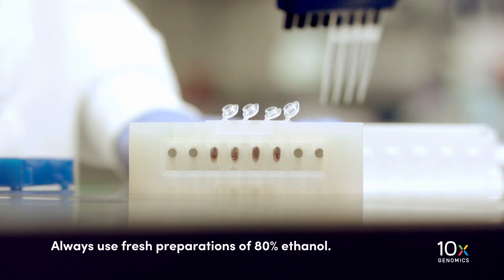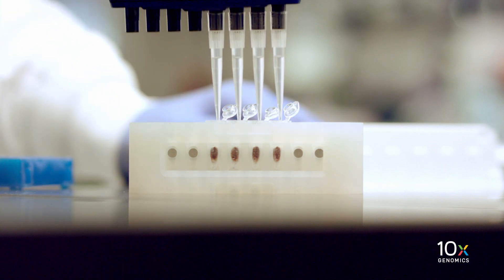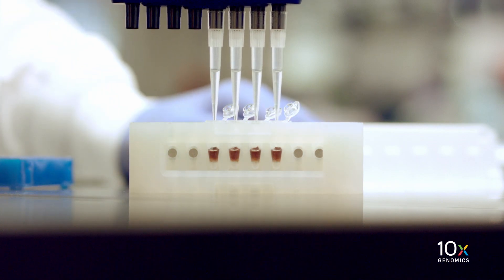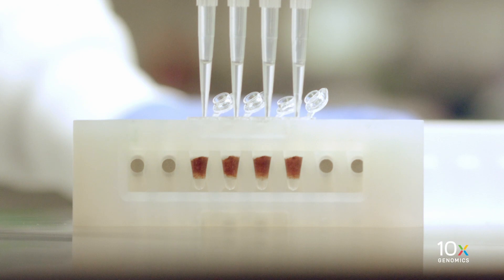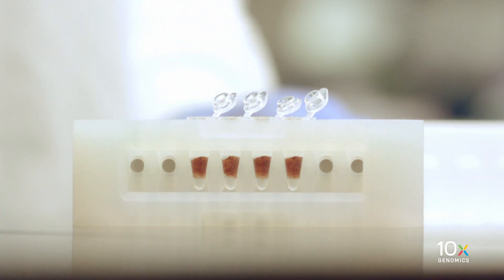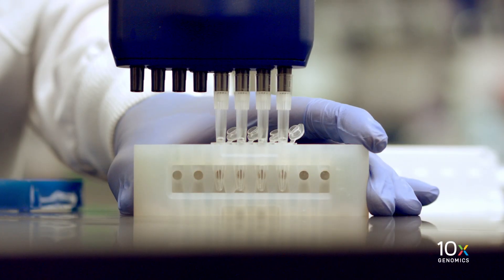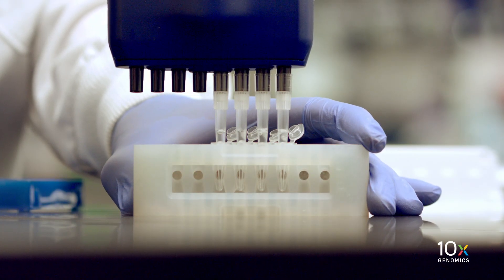Now we're going to perform the ethanol washes with freshly prepared 80% ethanol. Always use fresh preparations of 80% ethanol. First, we add 150 µL of 80% ethanol twice to the pellet while on the magnet for a total volume of 300 µL, and let stand for 30 seconds. Carefully remove and discard the ethanol wash.